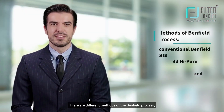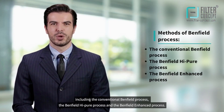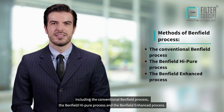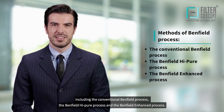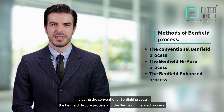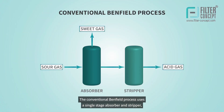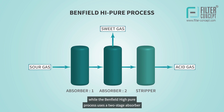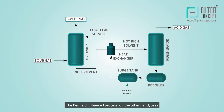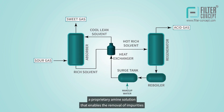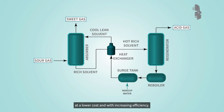There are different methods of the Benfield process, including the conventional Benfield process, the Benfield high-pure process, and the Benfield enhanced process. The conventional Benfield process uses a single-stage absorber and stripper, while the Benfield high-pure process uses a two-stage absorber and stripper to achieve higher purity levels. The Benfield enhanced process uses a proprietary amine solution that enables the removal of impurities at a lower cost and with increasing efficiency.